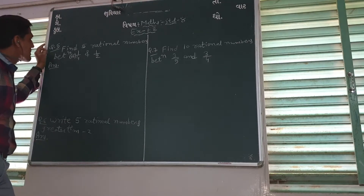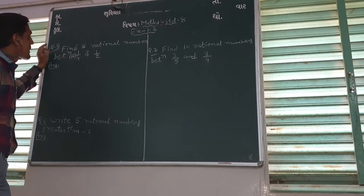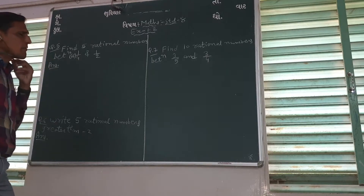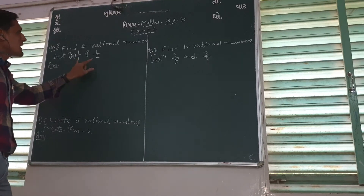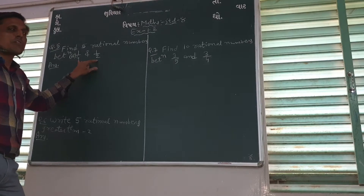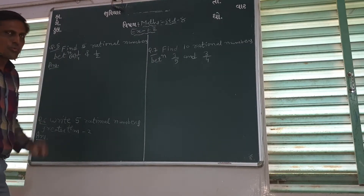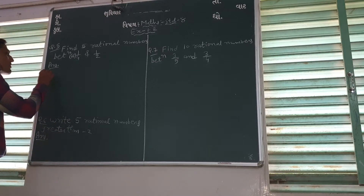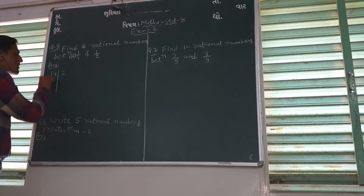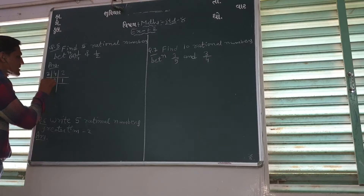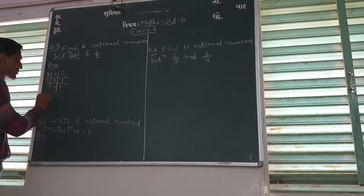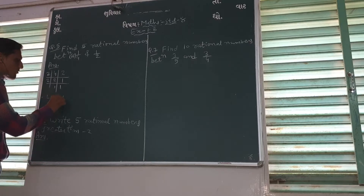In this video we are doing question number 5, number 3. The question is to find rational numbers between 1/4 and 1/2. What will we do first? We will take the LCM of 4 and 2. LCM of 4 and 2 is equal to 4.